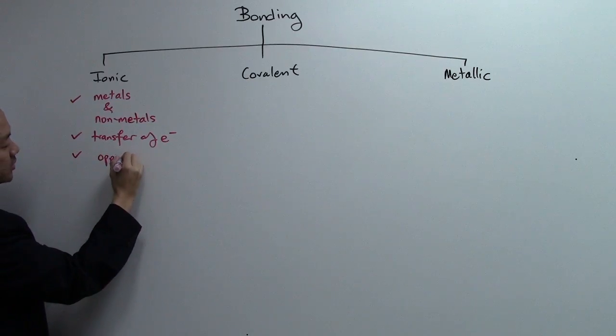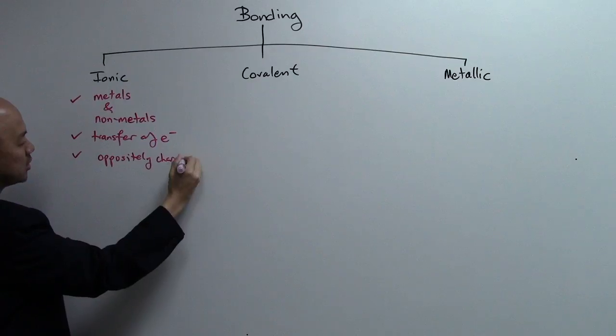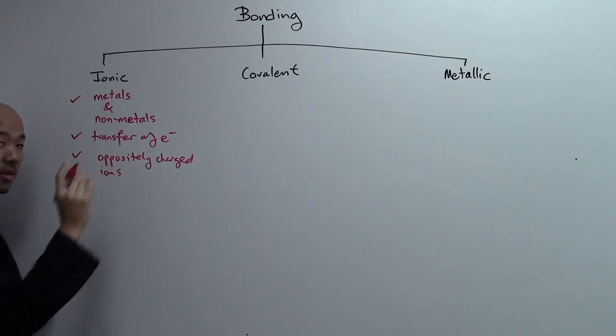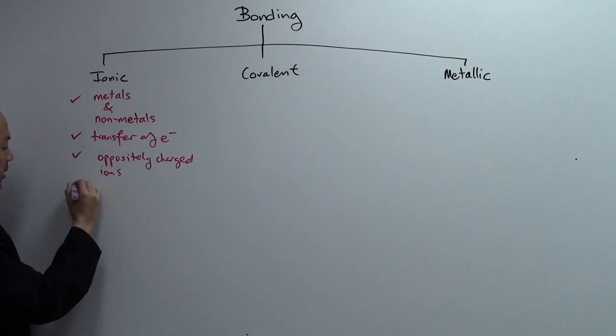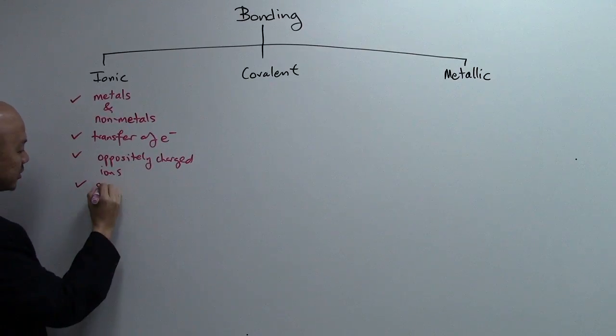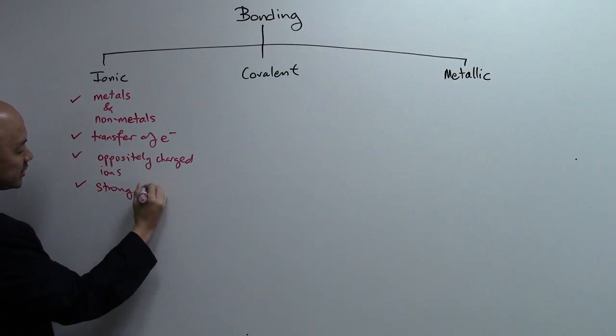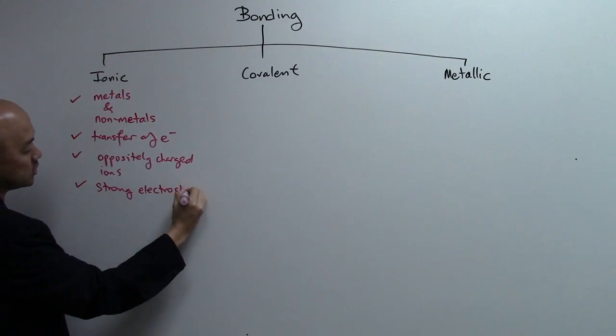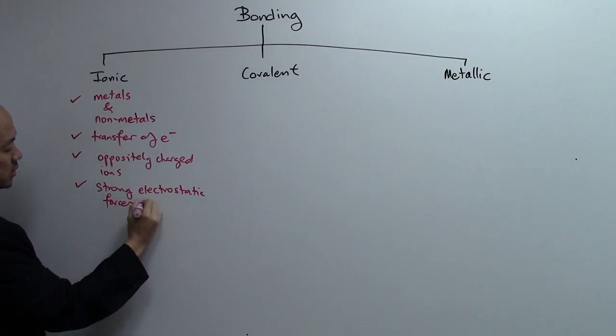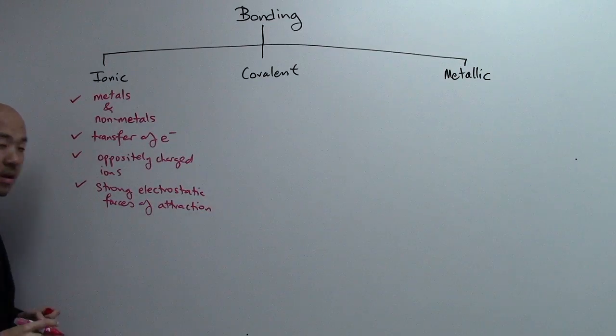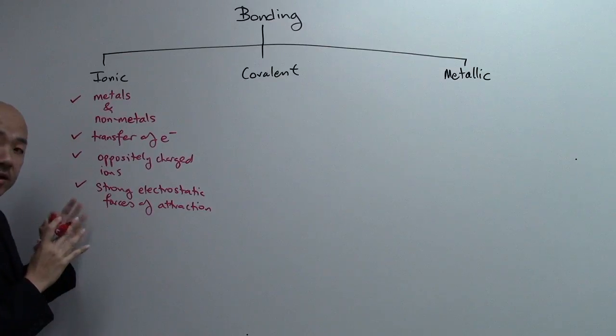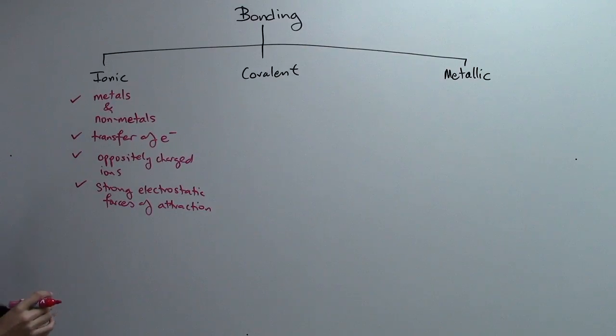So you have your oppositely charged ions that are formed. These oppositely charged ions will then be held together by your strong electrostatic forces of attraction. And this is ionic bonding. You then have your ionic compound.